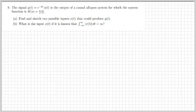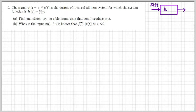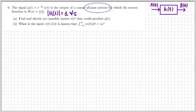Now let's move on to exercise 9. We are given a signal y(t) = e^(−2t)·u(t), which is the output of a causal all-pass system with system function H(s) = (s−1)/(s+1). We are asked to find and sketch two possible inputs x(t) that produce that y(t). Looking at H(s), its magnitude equals one for every value of s, so the system passes every frequency — it's not low-pass, high-pass, or band-pass; it is all-pass.